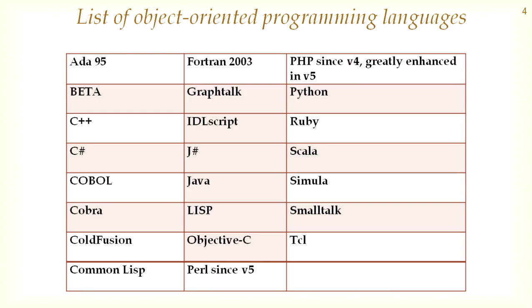The following table contains most of the object-oriented programming languages: Ada 95, Fortran 2003, PHP, Beta, Smalltalk, Python, C#, IdealScript, Ruby, C++, J#, Scala, Go, Java, Cobra, Common Lisp, Perl, Objective-C, TCL, and ColdFusion, among others.